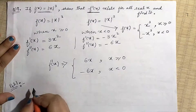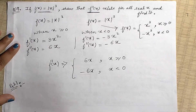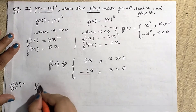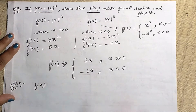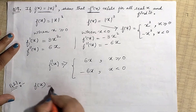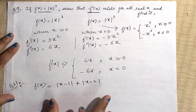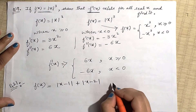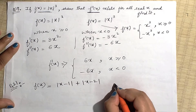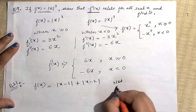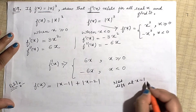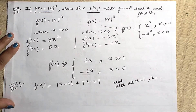For question 21, you just need to give a simple example of a function that is continuous everywhere but differentiable at exactly only two points. The example is: f(x) = |x − 1| + |x − 2|. This function is continuous everywhere but not differentiable at x = 1 and x = 2.